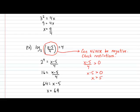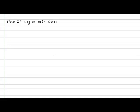And this is a perfectly valid solution because it does not violate our restrictions. That's all there is to solving log equations of the type where you have a log on one side of the equal sign and no log on the other side. Next, let's take a look at a case 2 type of log equation in which you have a log on both sides of the equal sign.